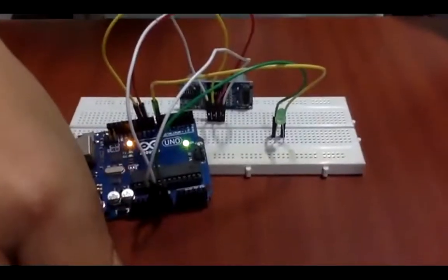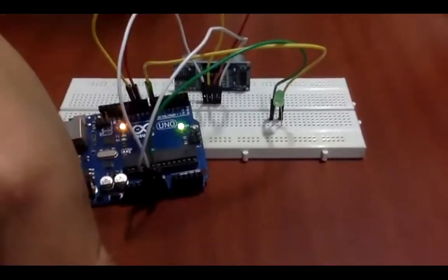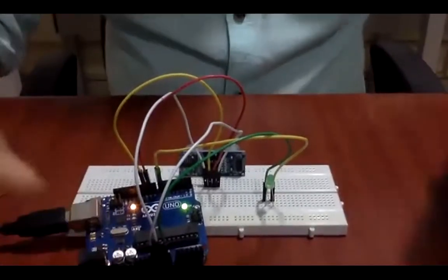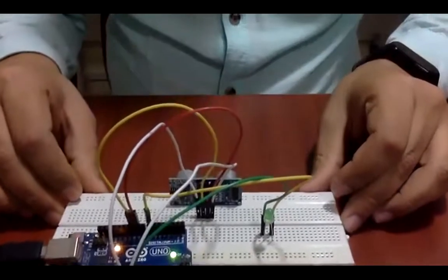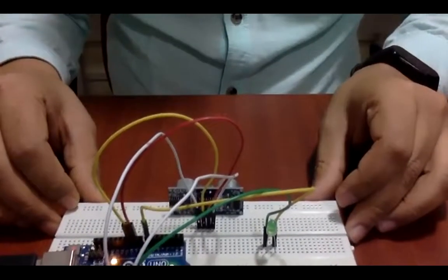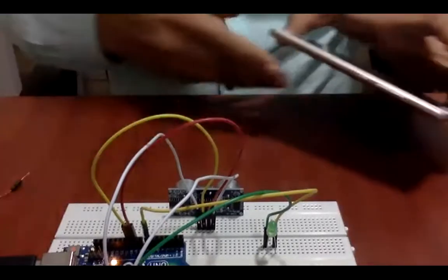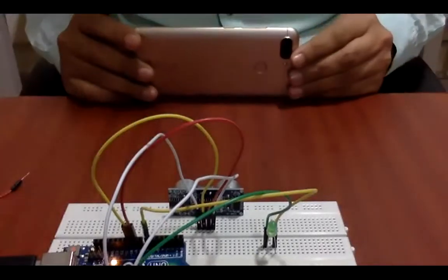Now let's see how this LED works. I'm applying some obstacle. Right now the distance is, you can see the distance there. Now I'll use this obstacle.